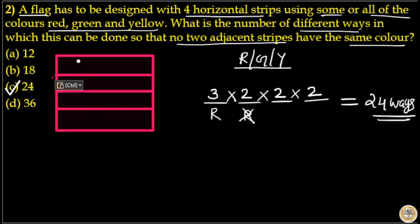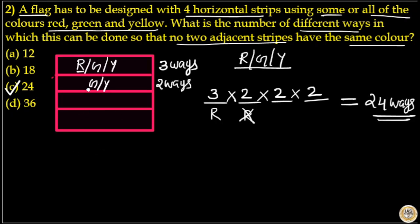In the first stripe you can choose red, green, or yellow — so you can fill the first stripe in three ways. If you choose red in the first stripe, you can only choose green or yellow in the second stripe, so you can fill the second stripe in two ways. If you then choose green, the remaining colors are red and yellow, so you can fill the third stripe in two ways.